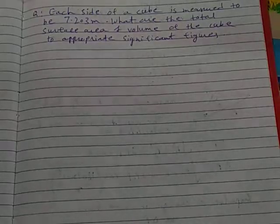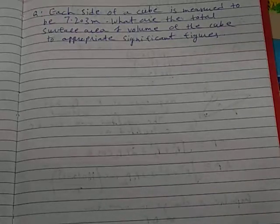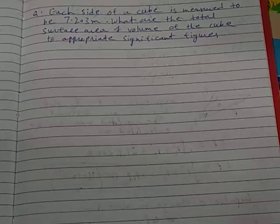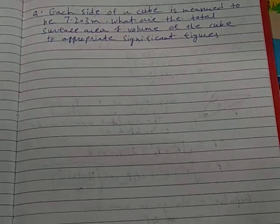Hello students. Now we have one question. Each side of a cube is measured to be 7.203 meters. What are the total surface area and volume of the cube to appropriate significant figures?